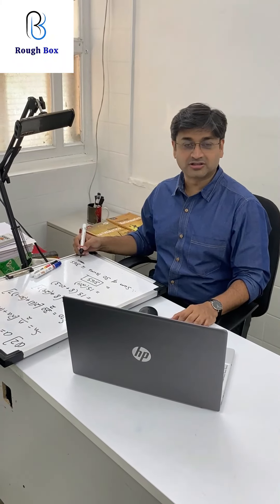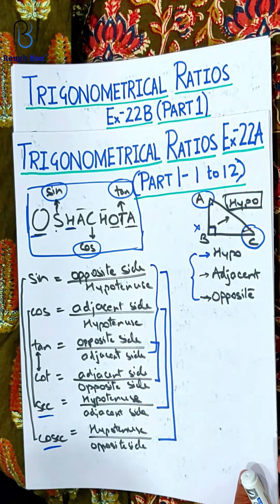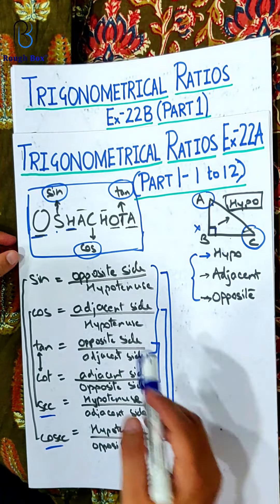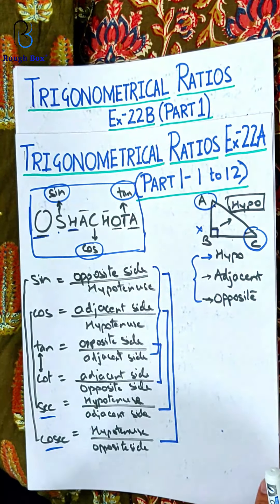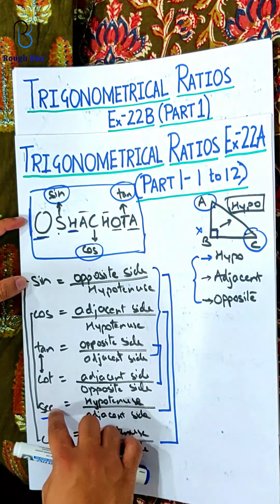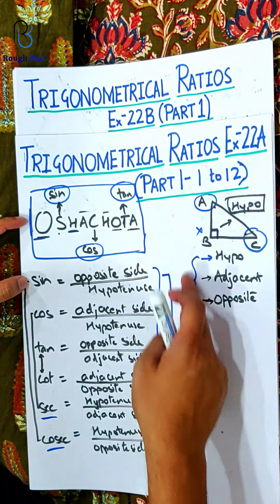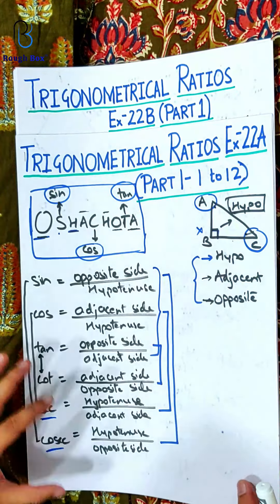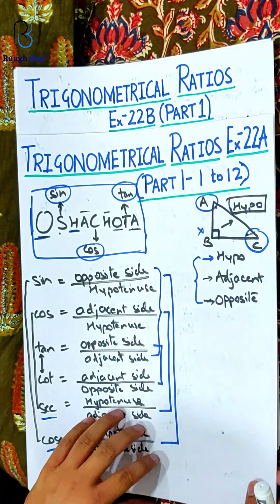Hello everyone, this is Dr. Mitesh Radha. Welcome to Ravox, our learning companion. So just a quick recap — Osha Chota, everyone remembers? Not any other chota, Osha Chota. Sign, cos, tan, cot, sec, cos, and then accordingly you get your ratios. I hope you've taken a screenshot and put it on the software. Everybody who's done it, good job.